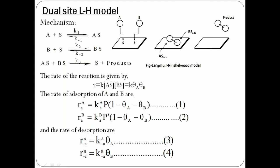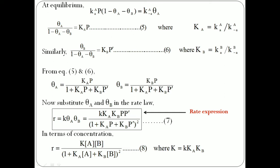In the Dual-Site LS Model, two reactants A and B compete for the same adsorption site S, forming the compounds AS and BS. After being adsorbed on the surface, AS and BS combine together to form the product. The rate of the reaction is directly proportional to the fraction of sites covered by A and the fraction of sites covered by B. At equilibrium, the rate of adsorption is equal to the rate of desorption. After equating equations 5 and 6, we get the values of theta A and theta B. Substituting into the rate law, we get the rate expression for the Dual-Site LS Model.